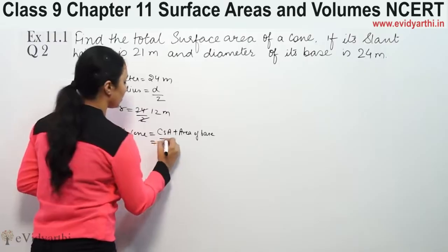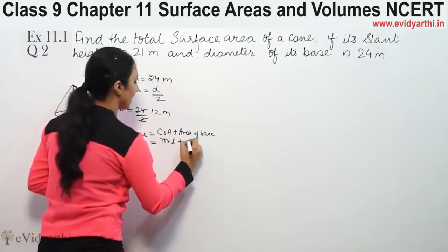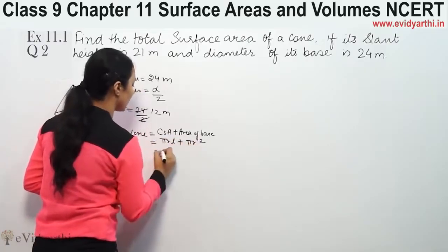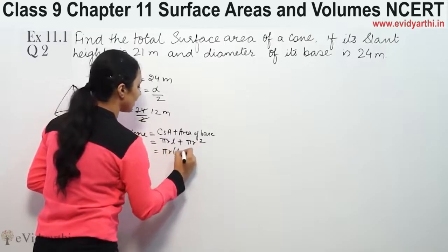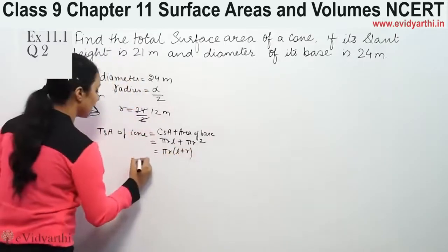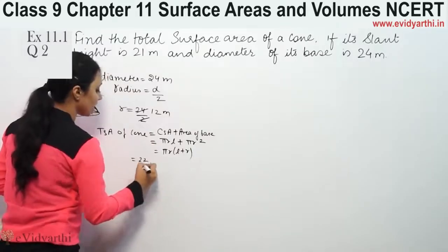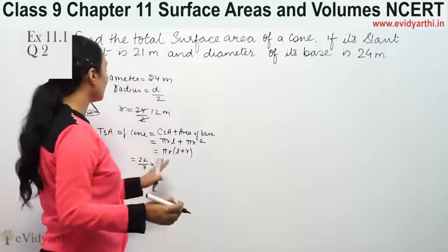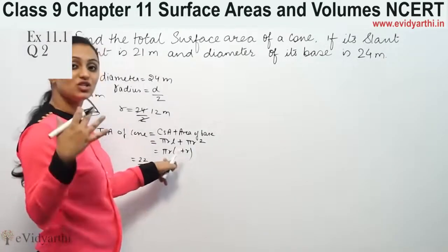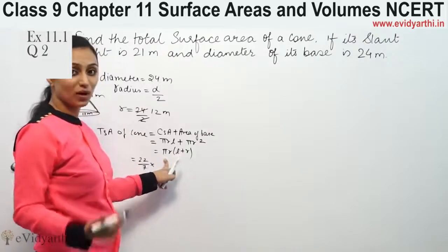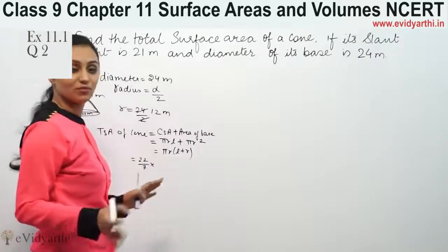So curved surface area formula is pi r l and base formula is pi r square. Taking pi r common, we get pi r times (l plus r). Pi's value is 22 by 7. If the question doesn't give a value, we use 22 by 7, otherwise we use whatever is given, whether it's 3.14 or 22 by 7.